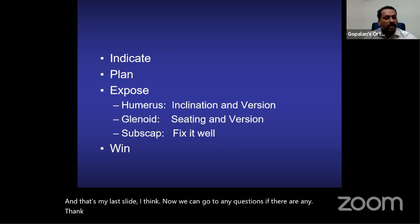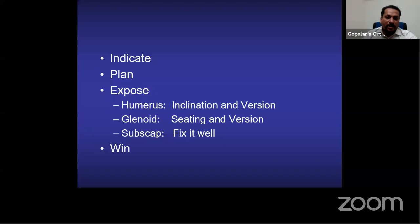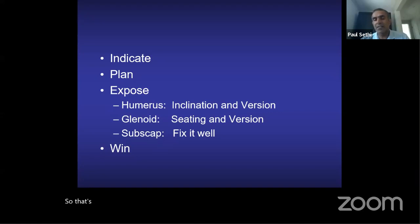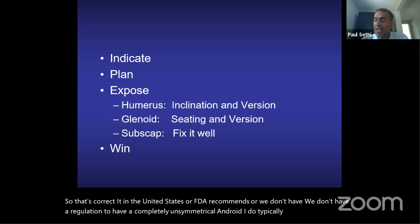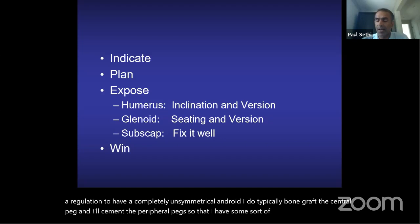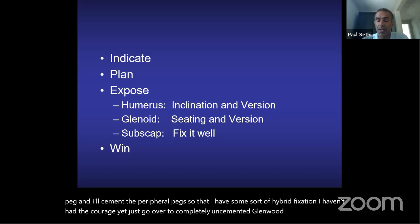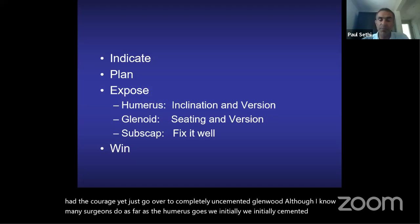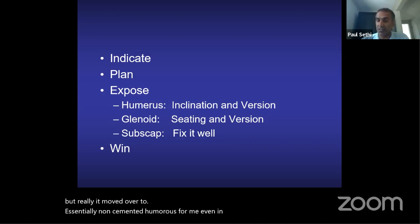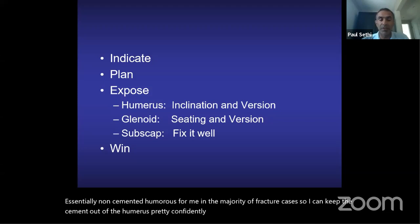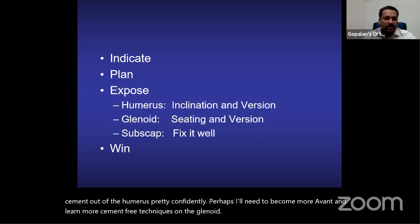Thank you, Paul, for that fantastic presentation — a brilliant overview on shoulder arthroplasty. Regarding cementing: in the United States, the FDA does not allow a fully uncemented glenoid. I typically bone-graft the central peg and cement the peripheral pegs for a hybrid fixation. I haven't moved to completely uncemented glenoid yet, though many surgeons do. As for the humerus, I've moved to essentially non-cemented humeral stems even in most fracture cases. I may need to become more avant-garde and learn cement-free glenoid techniques.